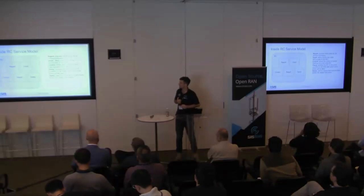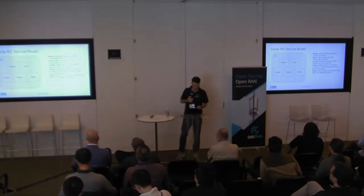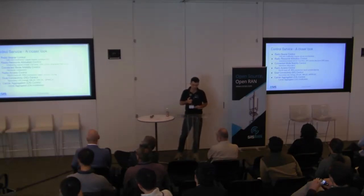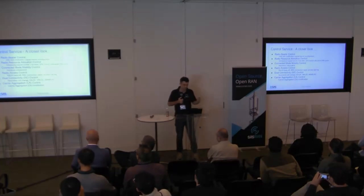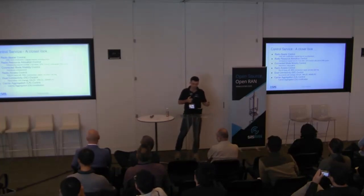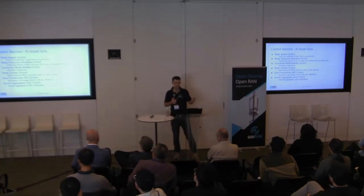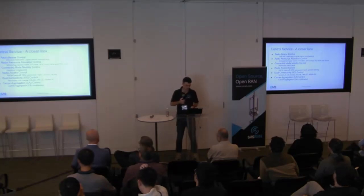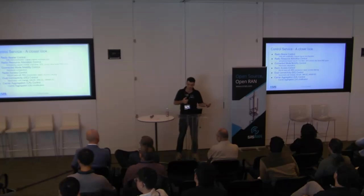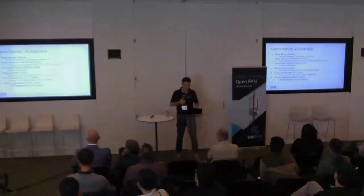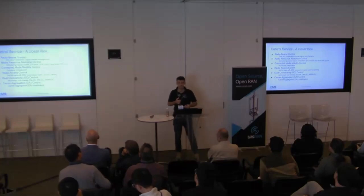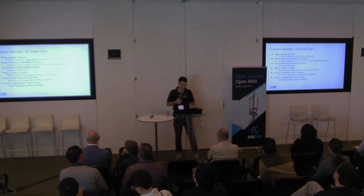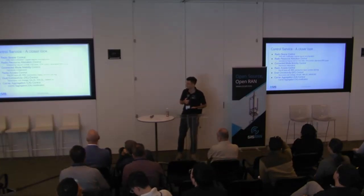For now we're only going to be focusing on the control aspect of the RC control model, as it's the main point of the service model. The control service model allows a wide range of actions: radio bearer control (like changing the QoS of a bearer), radio resource allocation control (changing things in the scheduler, changing the CQI used, setting PRB quotas), handover initialization for load balancing, radio access control (directly releasing UEs or setting different backup indicators), and dual connectivity and carrier aggregation control.